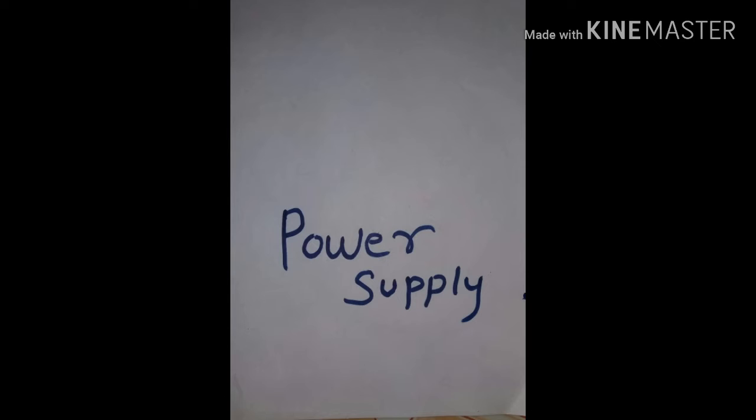Next is power supply. Robot needs a power supply. Power supply acts as food for the robot. For this purpose, DC power is used and it is provided by battery.